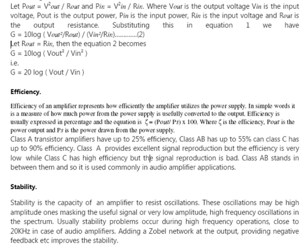Stability is the capacity of an amplifier to resist oscillations. These oscillations may be high-amplitude, masking the useful signal, or very low-amplitude high-frequency oscillations in the spectrum. Stability problems usually occur during high-frequency operation above 20 kHz in the case of audio amplifiers. Adding a Zobel network at the output and providing negative feedback improves overall stability.